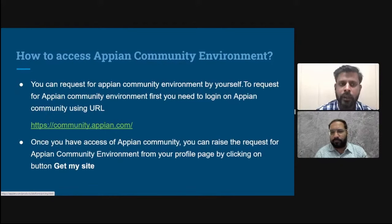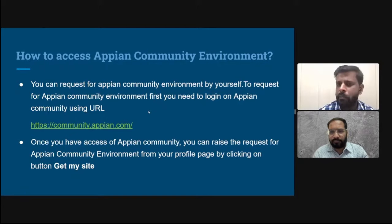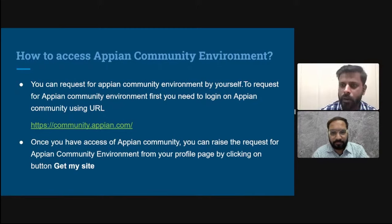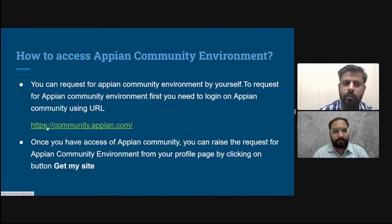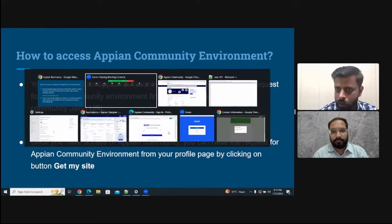How to access the Appian community environment: you can request it directly from Appian's community site. First, you need to log in to Appian community at the URL community.appian.com. You can see this is the Appian community environment login page. If you are a new user, you can click 'Register Now' to register on Appian community.